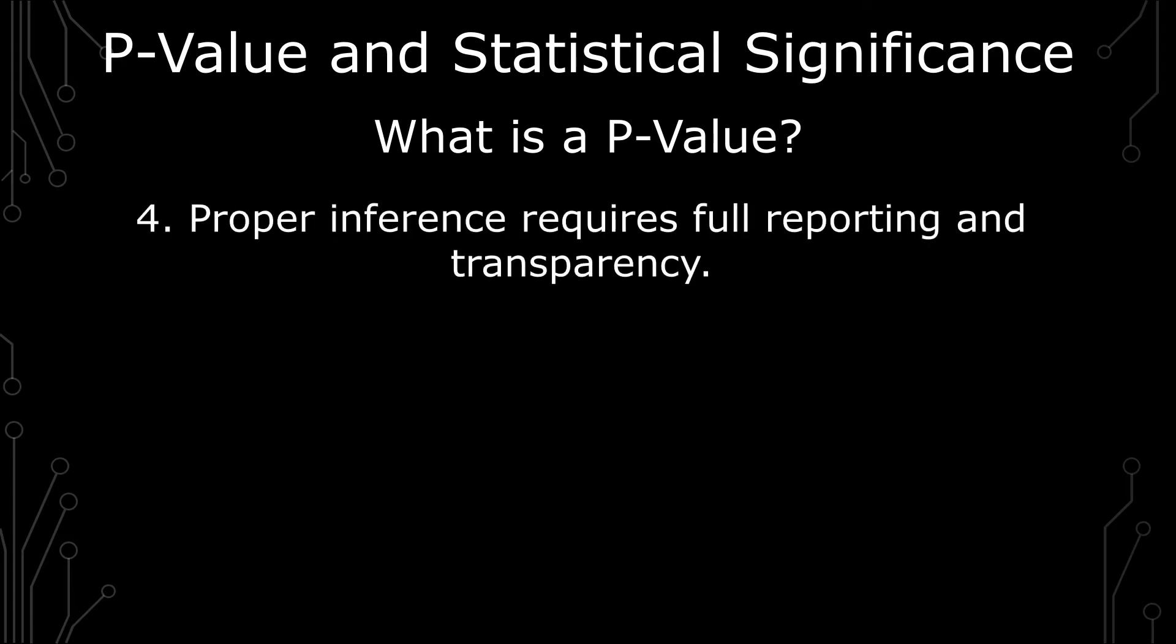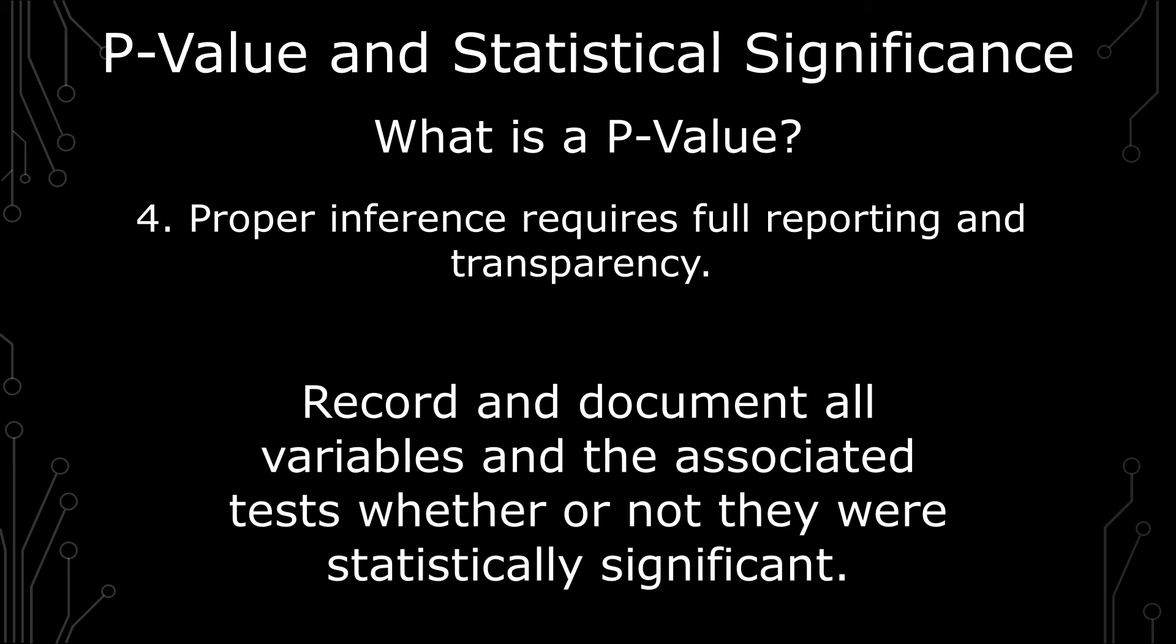The fourth principle states proper inference requires full reporting and transparency. And this has to do with the research articles themselves. So this is kind of a critique of the fact that if you have significant data it would typically be published. If you didn't have significant data it wouldn't be published. And that's inappropriate for a lot of reasons.